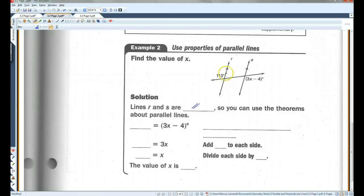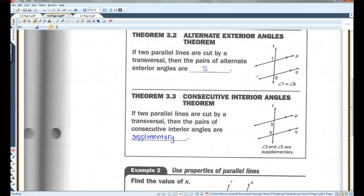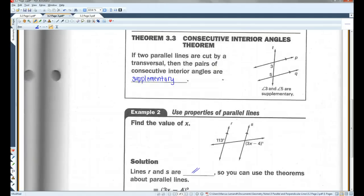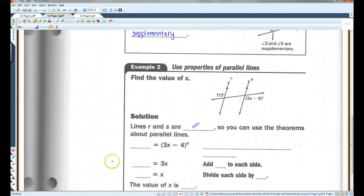Hopefully, you guys can see that this angle and this angle are alternate exterior angles. And as we know, we just learned, alternate exterior angles are going to be congruent when the lines are parallel.